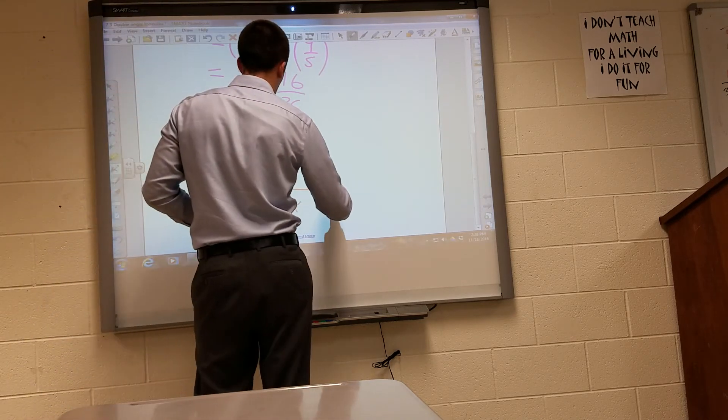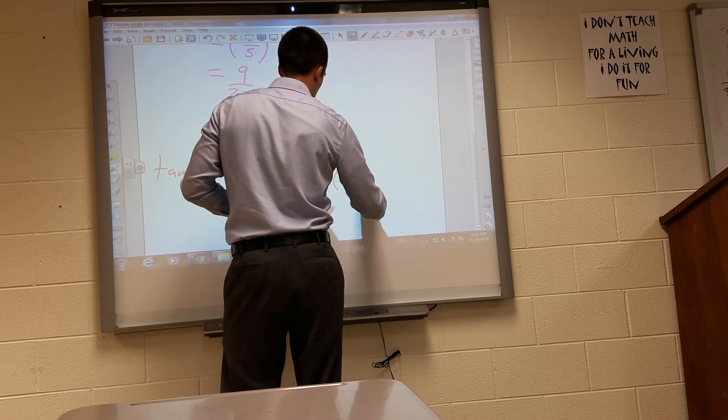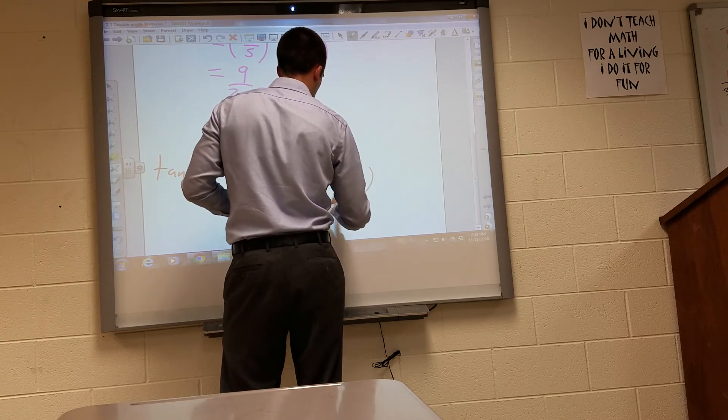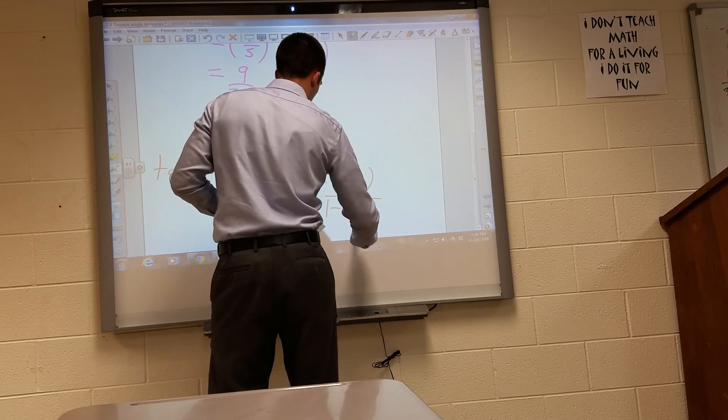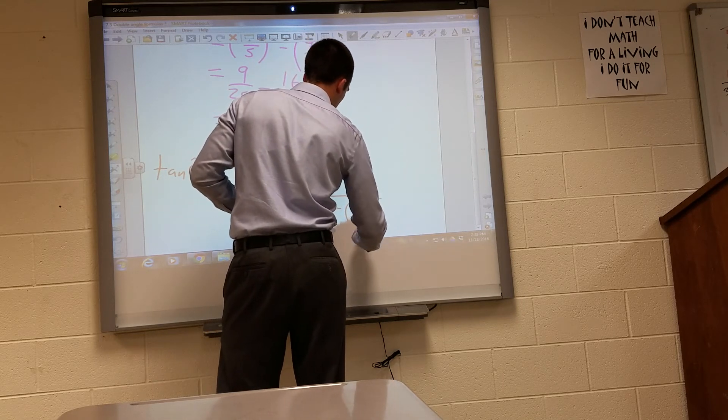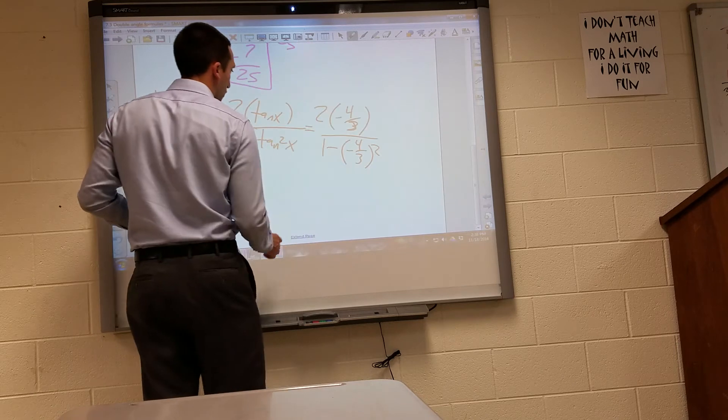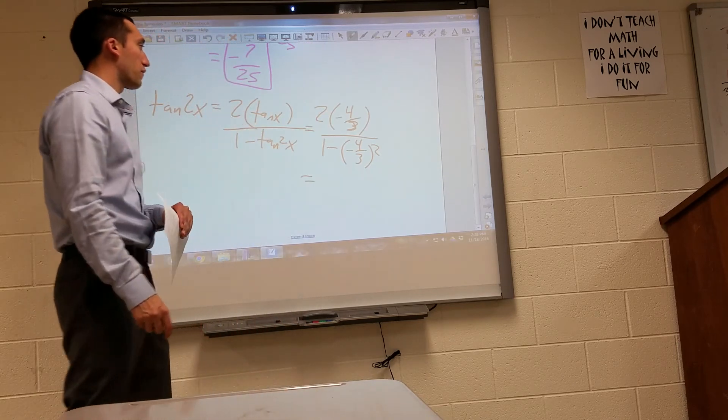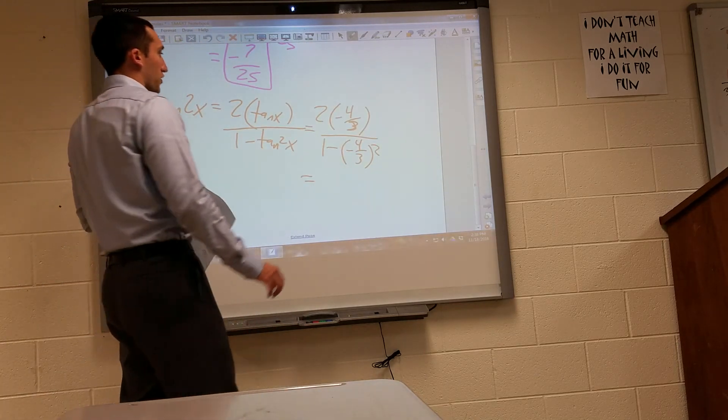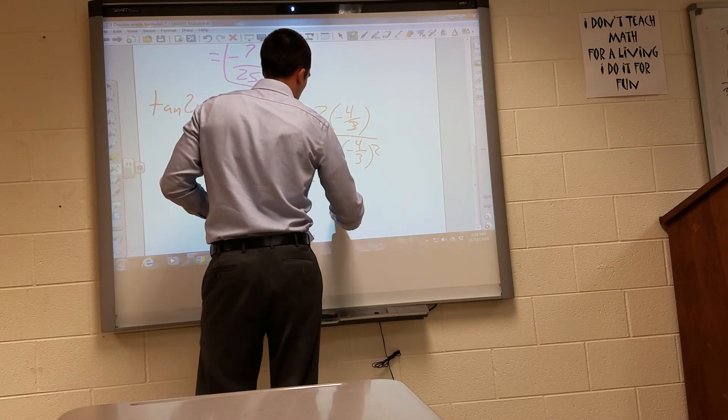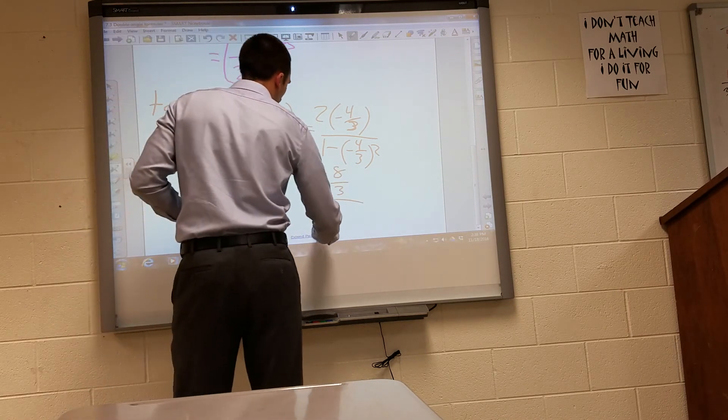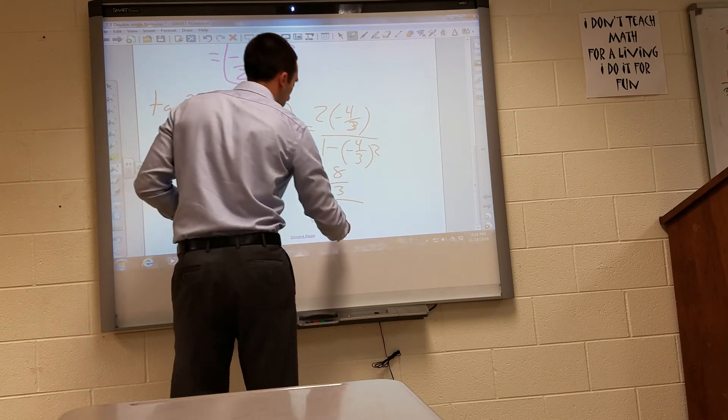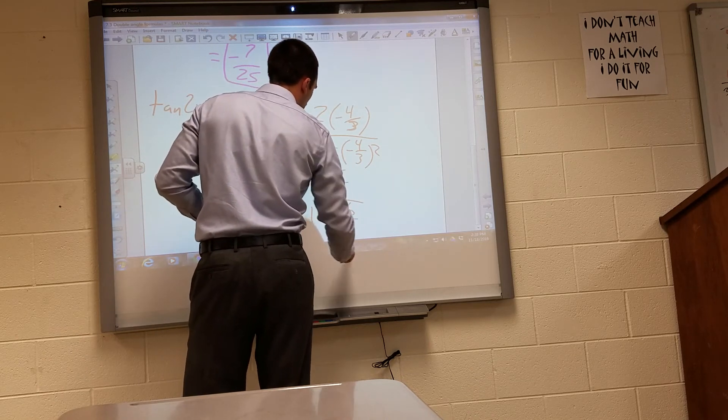Now I'm going to go ahead and plug in what I know. I know the tangent of x is negative four-thirds. Then they square that in the tangent double-angle formula. Multiply straight across. I get negative eight over three. Over one minus. If I square this, I get a positive 16 ninths.